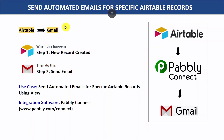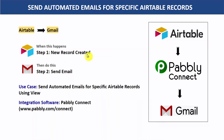Hey everyone, in this video we are going to learn how you can automatically send emails for every new record added to Airtable. As we all know, Airtable and Gmail are two different applications and there is no direct connection between them. That's why we are going to integrate both with the help of an integration software called Pably Connect, so that whenever a new record is created in Airtable, Pably Connect will automatically send an email via Gmail. The best part is this process requires no coding knowledge.